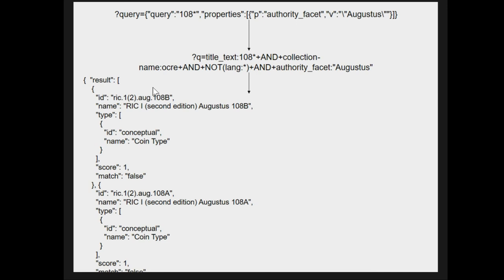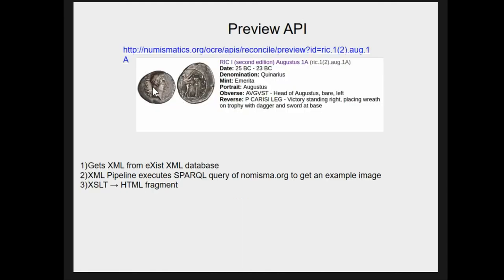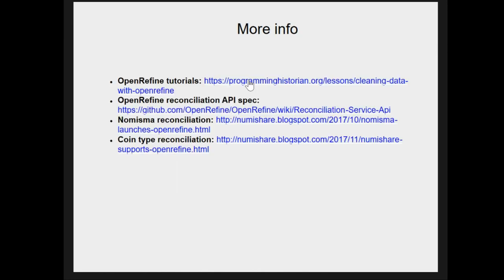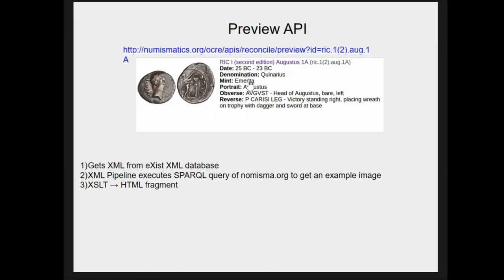OpenRefine has its own standardized specification. Underneath, what OpenRefine does is query numisma or OCRE with JSON, which then transforms that query into a Solr query — Solr is a search index software that underlies all of our applications. The Solr index responds in XML, and that gets transformed back into JSON that OpenRefine renders in a pop-up window. The OCRE queries are a bit more complex because they also involve querying against emperor names, denominations, or other attributes. The preview API pulls data directly from OCRE and executes a SPARQL query.